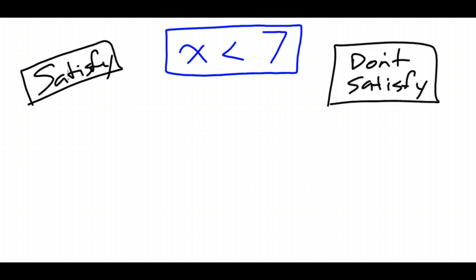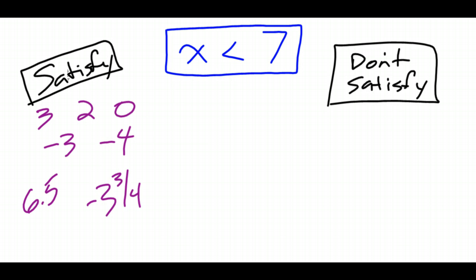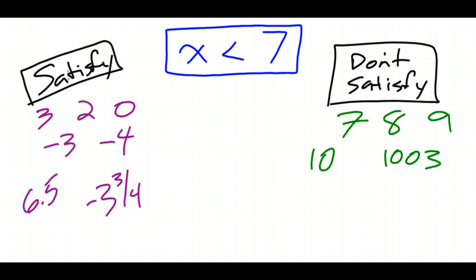There are an infinite number of examples you could use. Some whole numbers that do satisfy it — that are less than 7 — are 3, 2, 0, and any of the negative numbers. Any fraction or decimal like 6.5 or negative 3 and 3 fourths are also less than 7. To not satisfy this inequality, the number 7 itself does not satisfy it because 7 is not less than 7 — 7 is equal to 7. Any positive whole number 8 or greater, and corresponding fractions or decimals, would also not satisfy it.